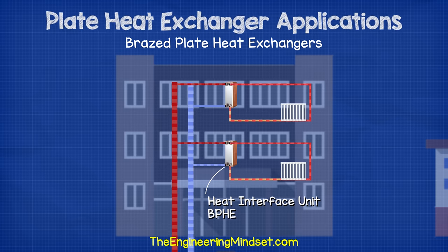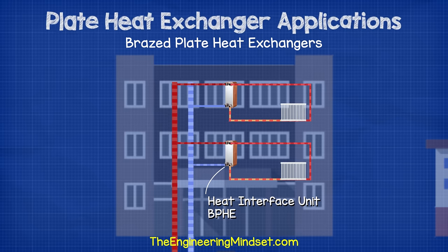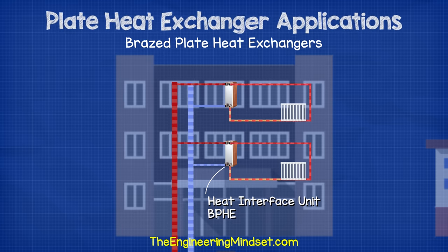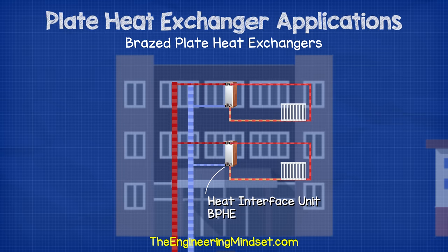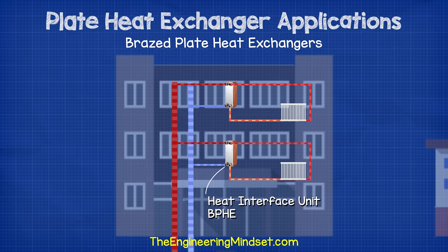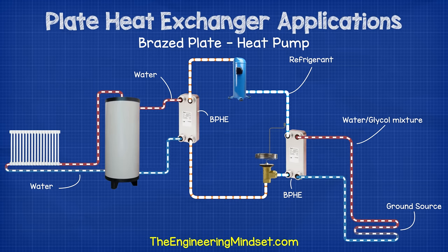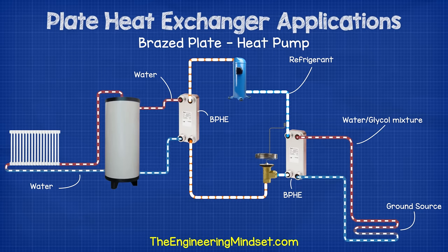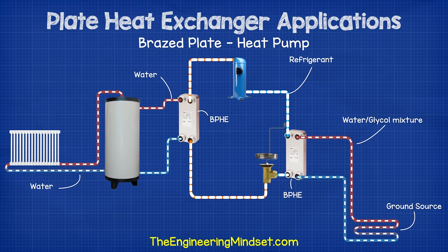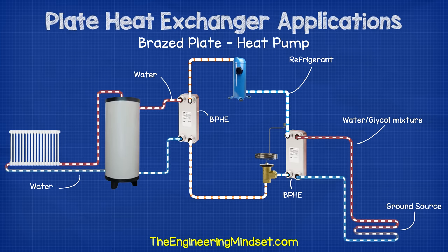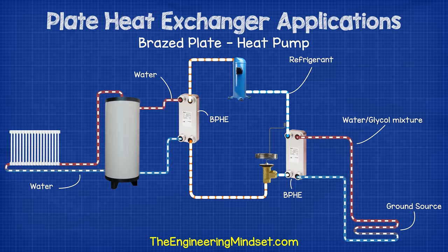For district heating and cooling, heat interface units connecting individual apartments or homes to heating and cooling networks will usually use a brazed plate type heat exchanger. Sometimes larger brazed plate heat exchangers connect buildings to the district network, though the majority are still gasket type. Heat pumps often use brazed plate type heat exchangers to connect separated loops — this is common in water source heat pumps, with brazed plates used for both the condenser and evaporator, separating circuits of water, refrigerant, and water-glycol mixtures.